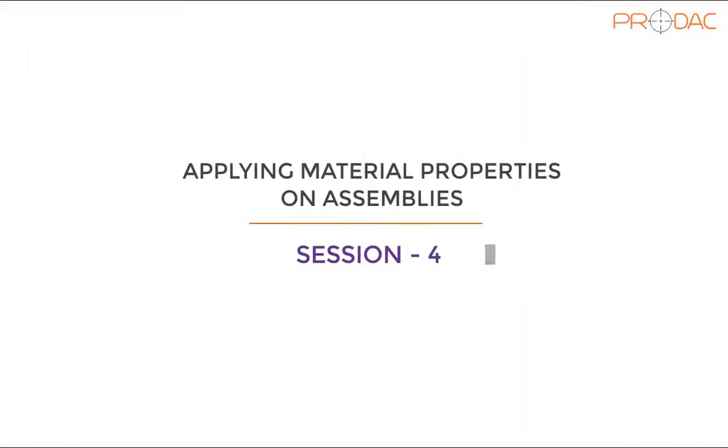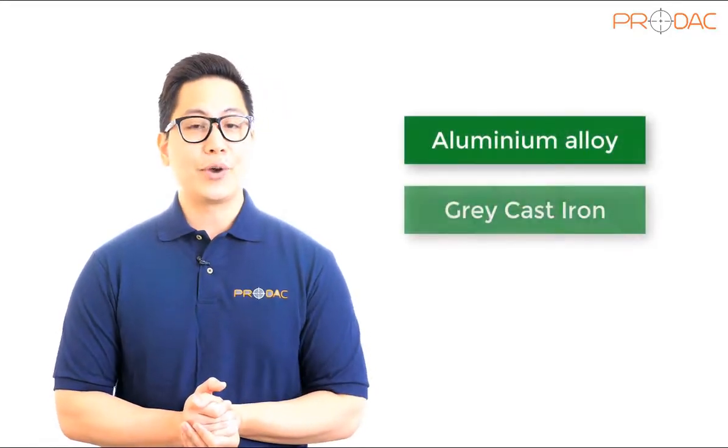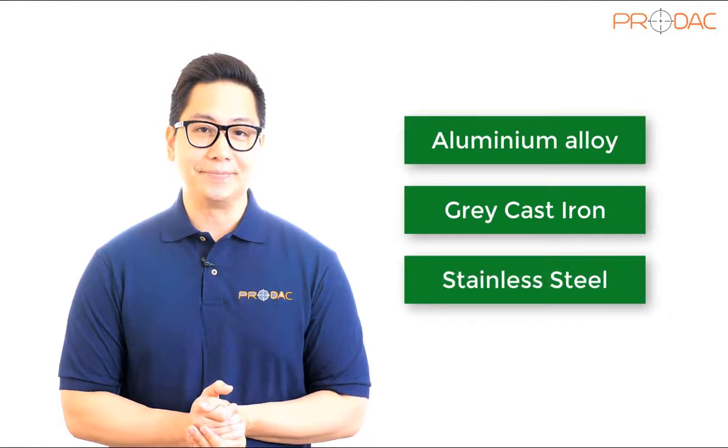Applying material properties on assemblies. In this video, you will learn how to apply different materials to different components of an assembly. We are going to apply three types of materials on an assembly: aluminum alloy, gray cast iron, and stainless steel.